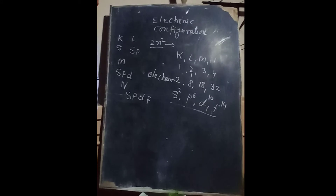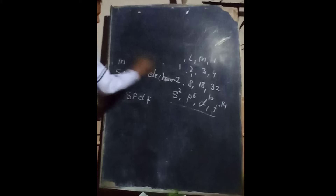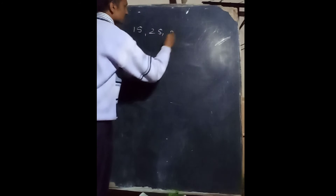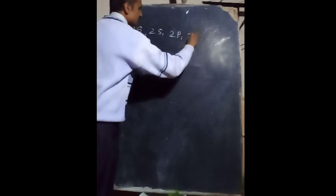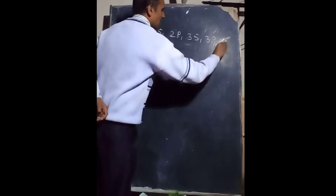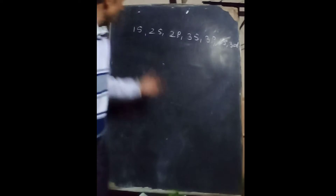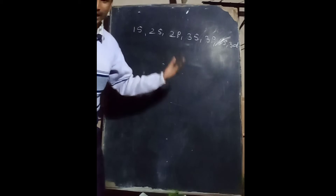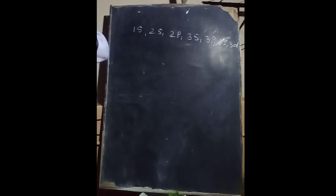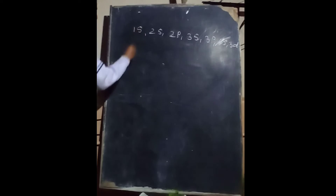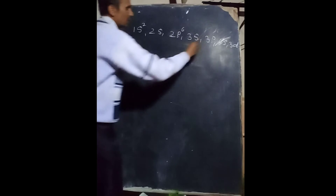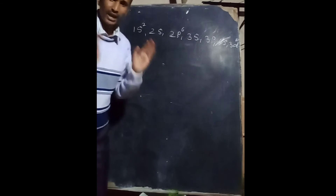Now, how to write the electronic configuration — first, what is the order? You should remember the order: 1s, 2s, 2p, 3s, 3p, 4s, then 3d. You should remember it. For higher classes there is a trick in the next video. For up to 10th standard, remember up to here. In the s sub-orbit always 2 electrons, p always 6 electrons, and d is 10 electrons.